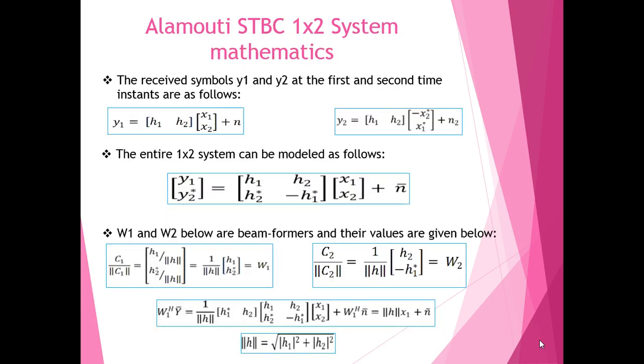Moving on to the mathematics involved in the Alamouti STBC 1x2 system. First, we have two transmitting antennas that send two symbols to the receiving antenna at two different time instants. In the first time instant, the symbol Y1 is received and is equal to the product of the channel matrix and the transmitting symbols, which is further added to the noise at the receiver end.